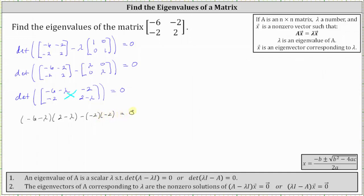And now we multiply out the left side, multiplying the two binomials. Negative six times two is negative 12, and then we have plus six lambda minus two lambda, which gives us plus four lambda, and then plus lambda squared, and then we have minus four equals zero.